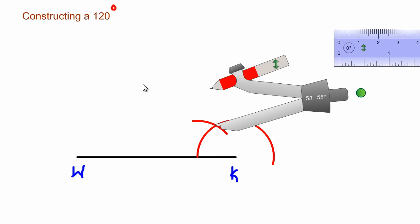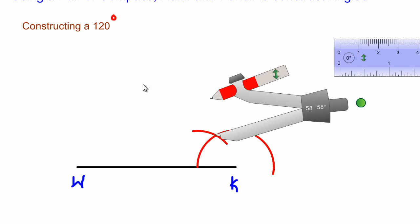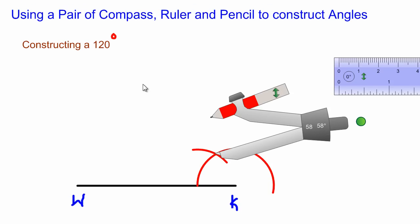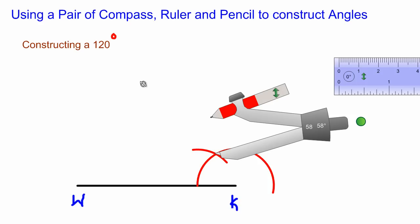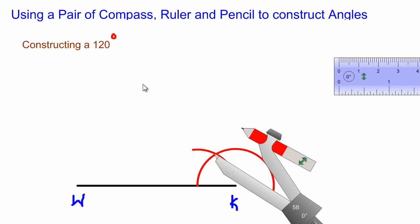When I was constructing a 60 degree angle before, this is what we did, so this angle here would be 60. So if I'm constructing a 120 now, then all I need to do is to swing the arc once more because 60 plus 60 would give me 120.